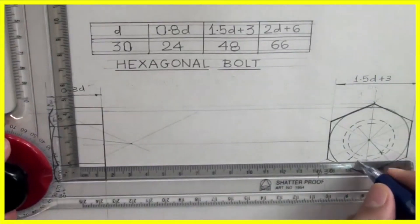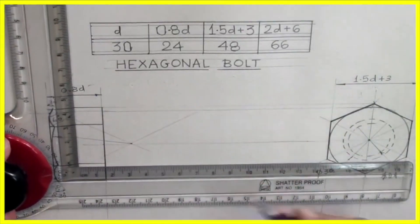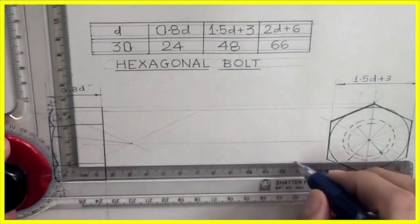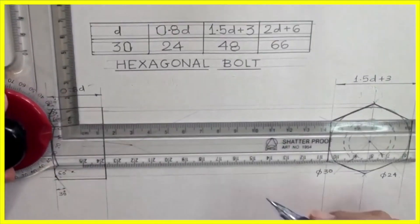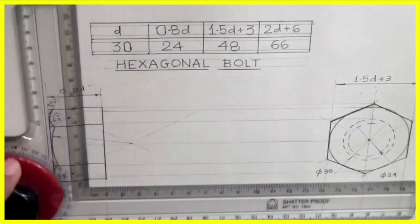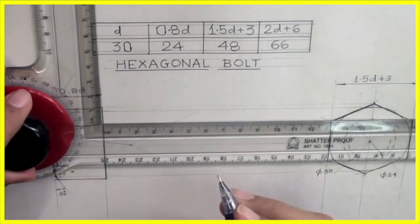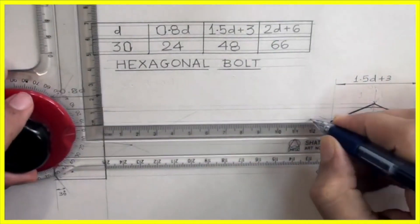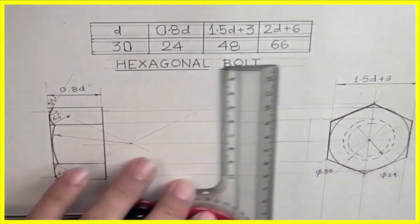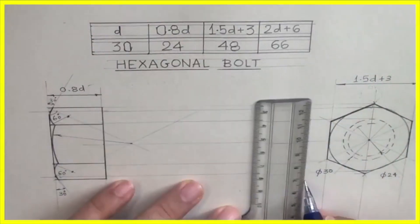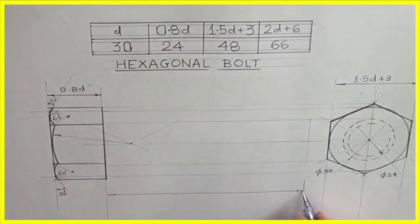After that I will extend from here diameter 30 and take shank length which is 120 mm. If it is not given we can take 3D also. We can take anything between 3D to 4D. In this case we are taking 4D. This is shank length.